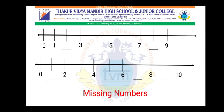Missing numbers. Now we are going to learn missing numbers. Kids, can you see few numbers are missing on the line? 1, 2, 3, 4, 5, 6, 7, 8, 9, 10. Now let's go to the next line: 0, 1, 2, 3, 4, 5, 6, 7, 8, 9, 10. The numbers we placed are called missing numbers.